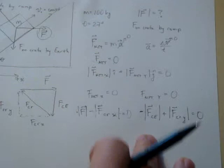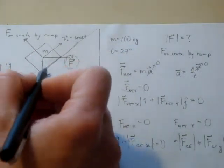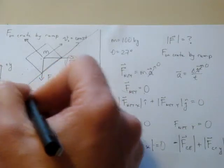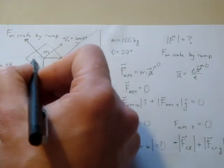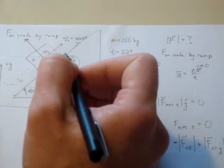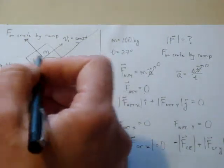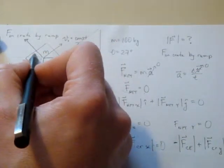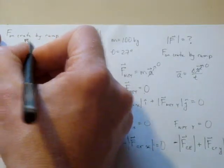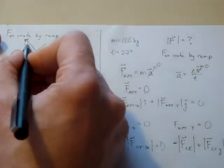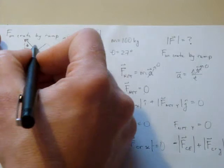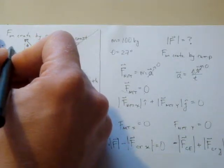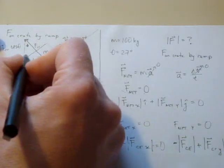Let's work through the geometry. We have the angle of our ramp, and we want to translate this vector into x and y coordinates. Using geometry, this angle is equal to this angle — these are alternate angles — so if the ramp angle is θ, then the geometry gives us that the vertical component of the force on the crate by the ramp is FcR times cosine of θ, and the horizontal component is FcR times sine of θ.